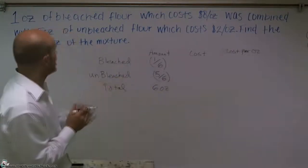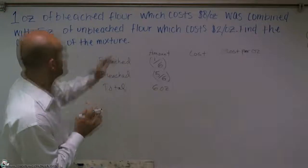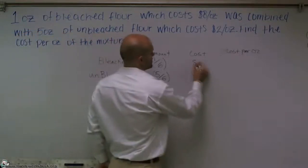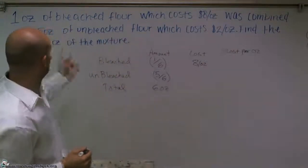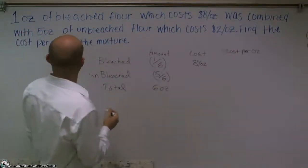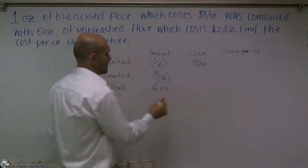Then we have a cost for the bleached was $8 per ounce and the unbleached was $2 per ounce.